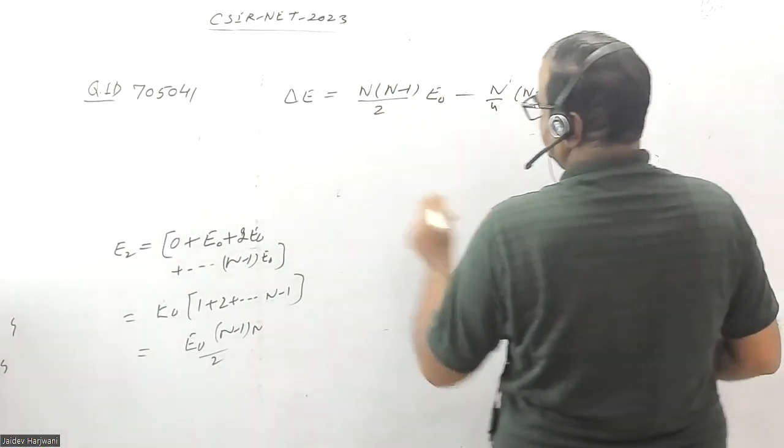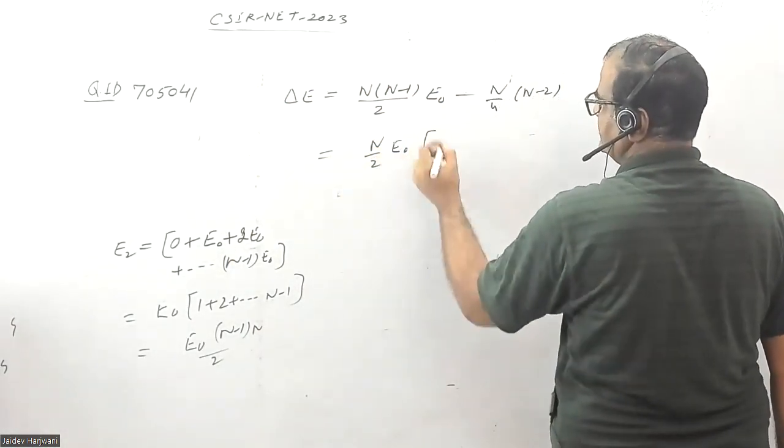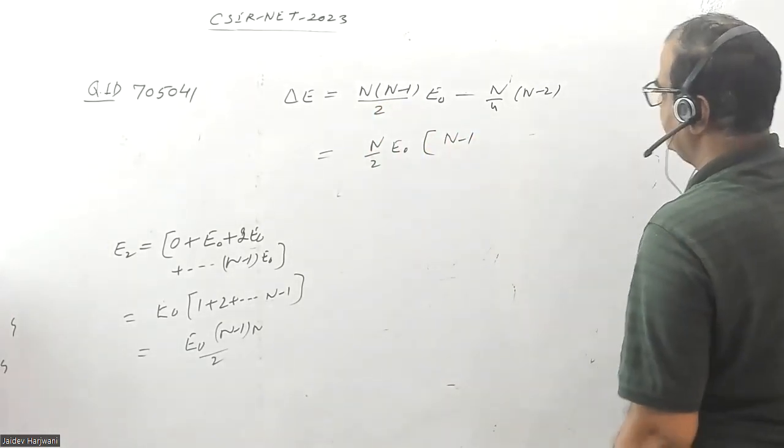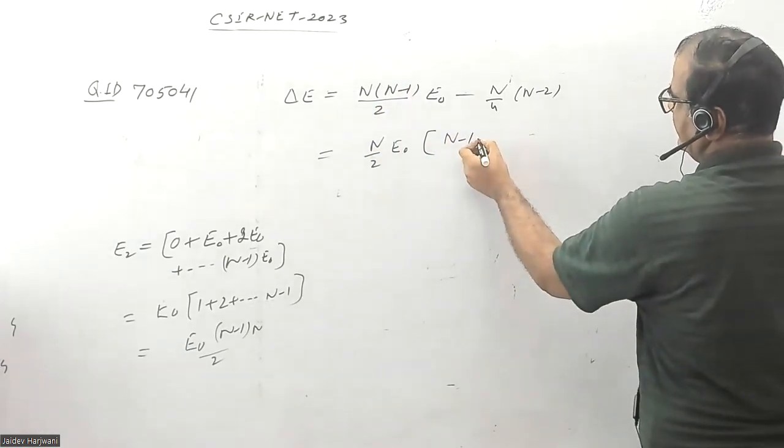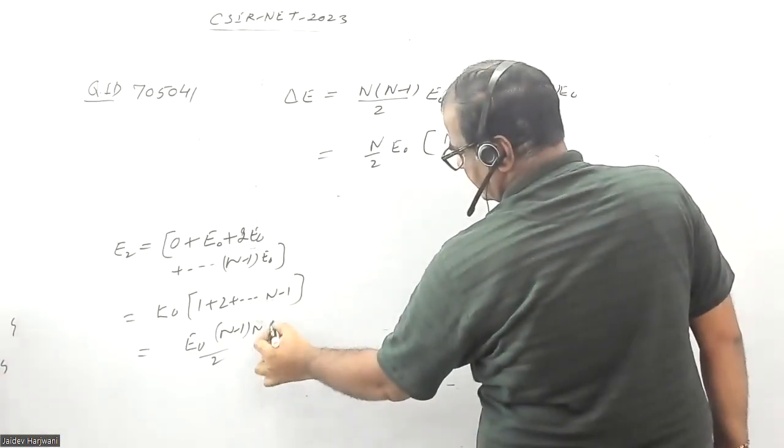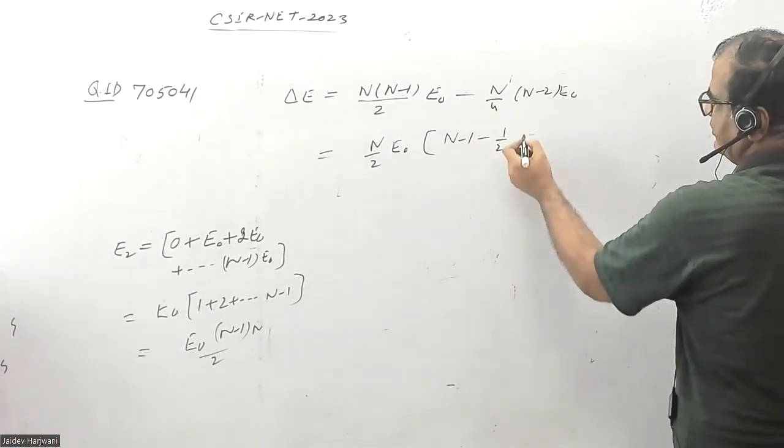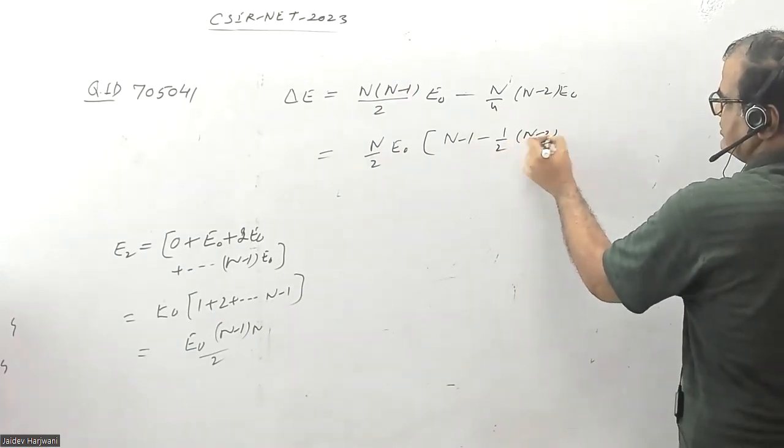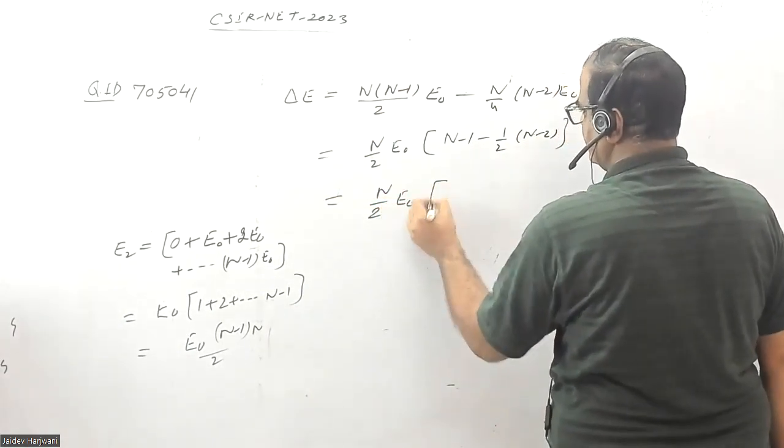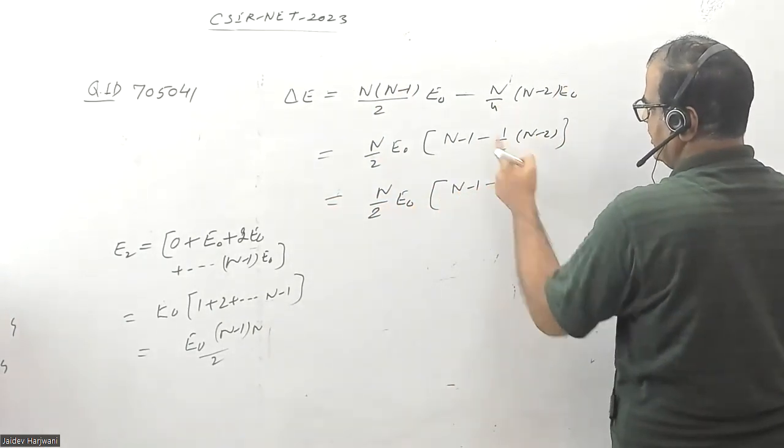The shift in energy will be: let us take N by 2 common and E0 also common. This will remain here: N minus 1, and here you will be having 1 by 2. E0 is also here. I'm taking that common, so here you will be having only 1 by 2 times (N minus 2).